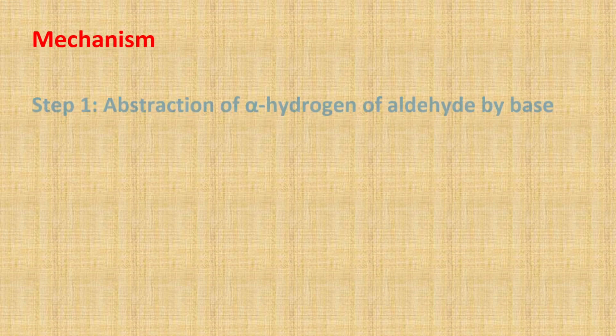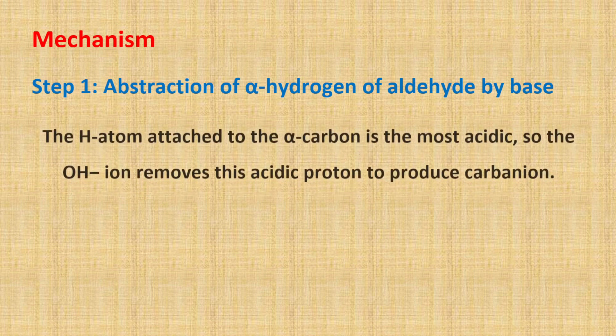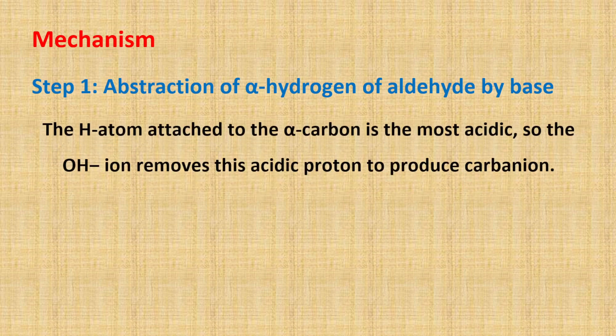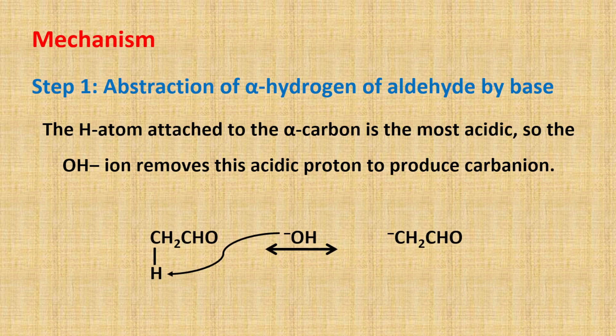Its mechanism. Step number one: abstraction of alpha hydrogen of aldehyde by a base. The hydrogen atom attached to the alpha carbon atom is the most acidic among all the hydrogens present in the aldehyde. So, the hydroxide ion removes the acidic proton of the alpha carbon atom to produce a carbanion.